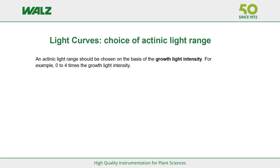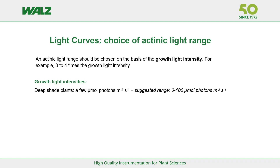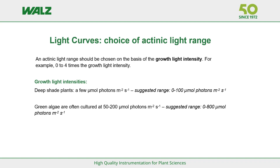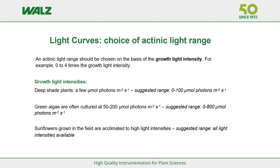The final topic is the actinic light range. We suggest the experimenter consider the growth light intensity: actinic light intensities ranging from 0 to 4 times the growth light intensity could be a good range. For shade plants, the suggested range would be 0–100 µmol photons m⁻² s⁻¹. For green algae cultured at 50–200 µmol photons m⁻² s⁻¹, the suggested range would be 0–800 µmol photons m⁻² s⁻¹. For sunflowers grown in the field and acclimated to high light, all available light intensities are suggested.